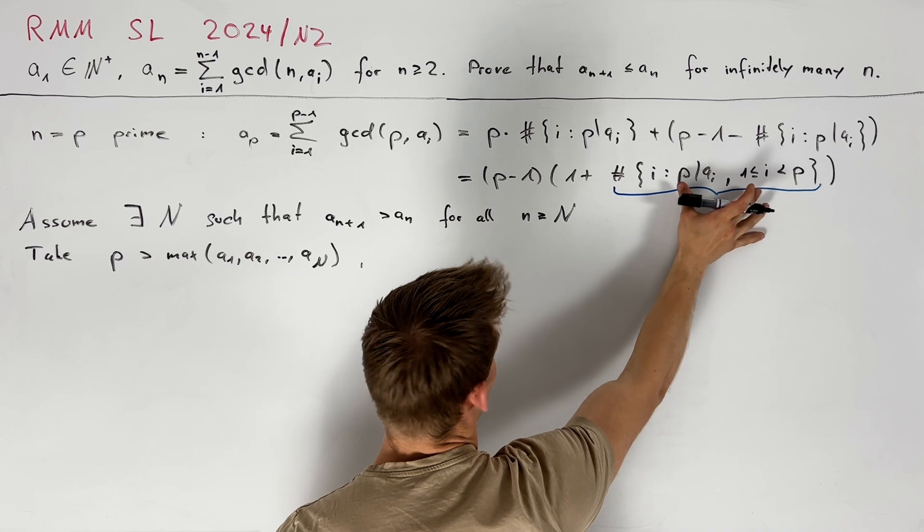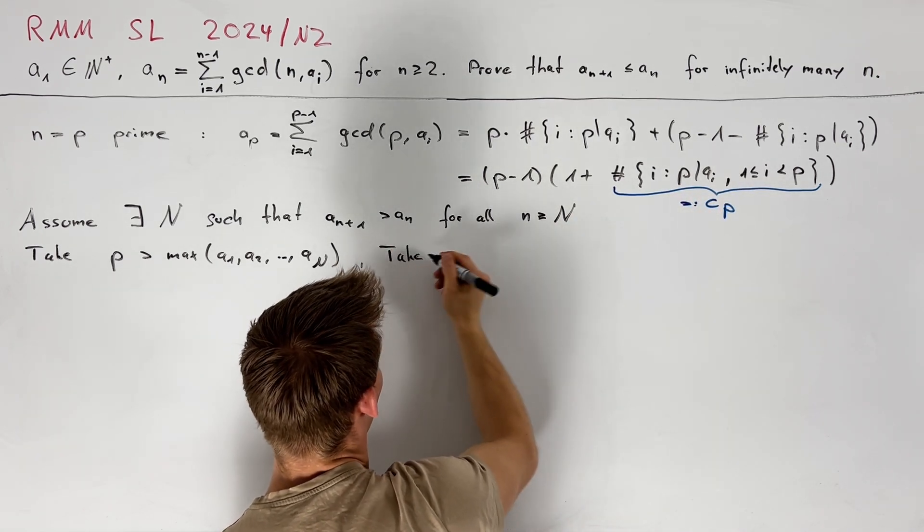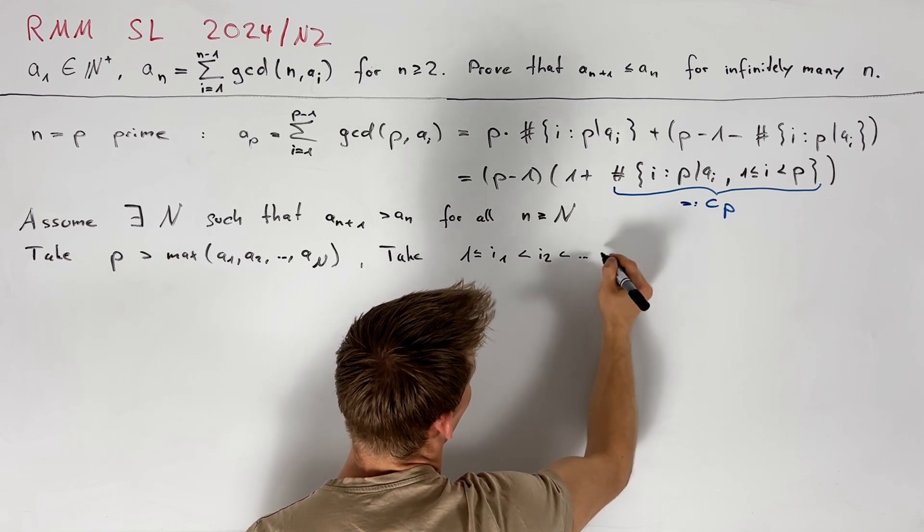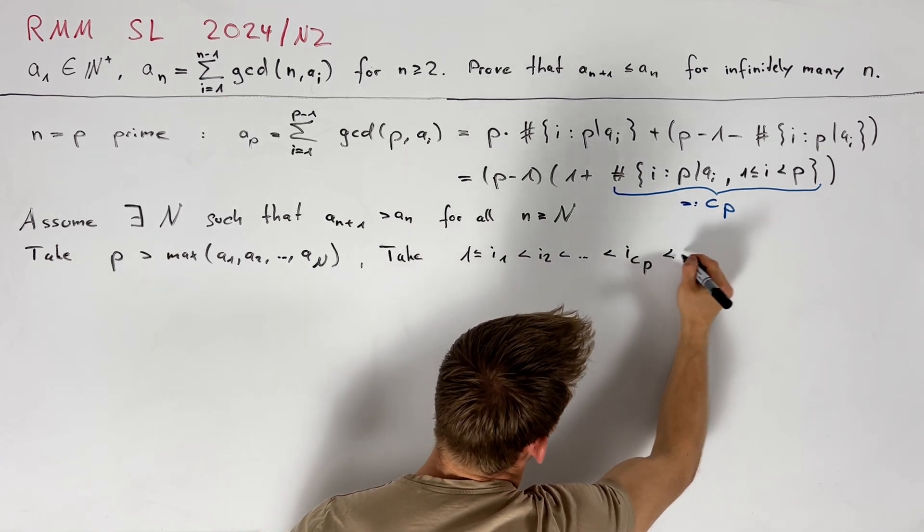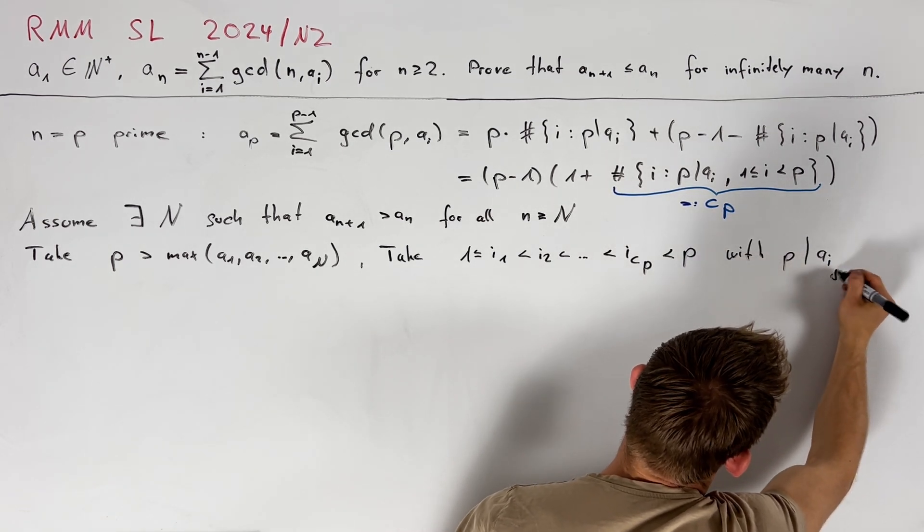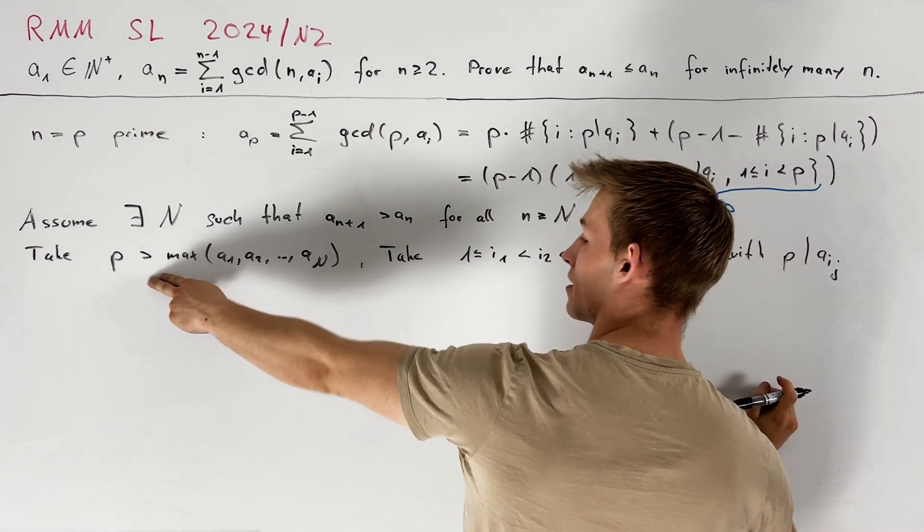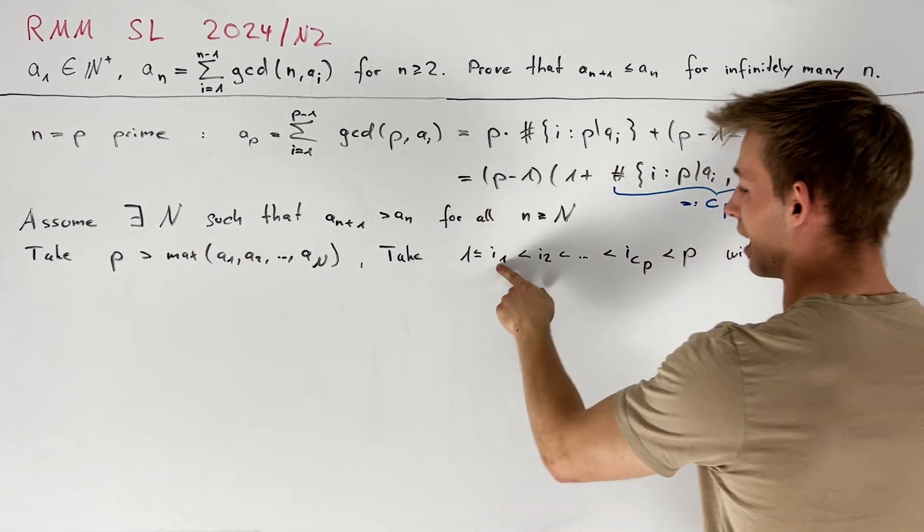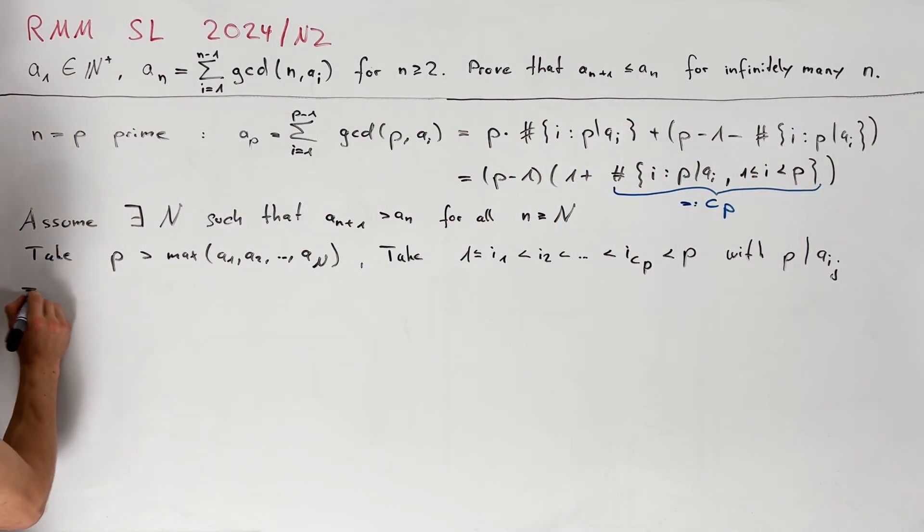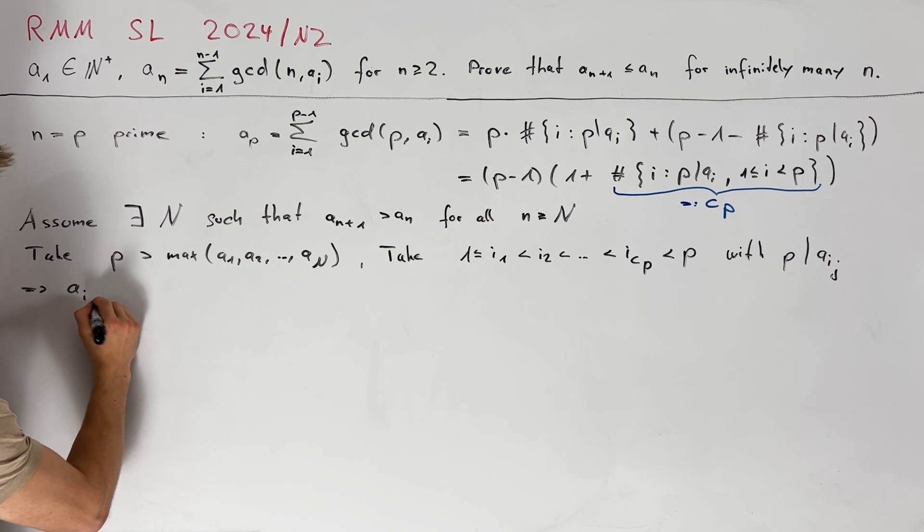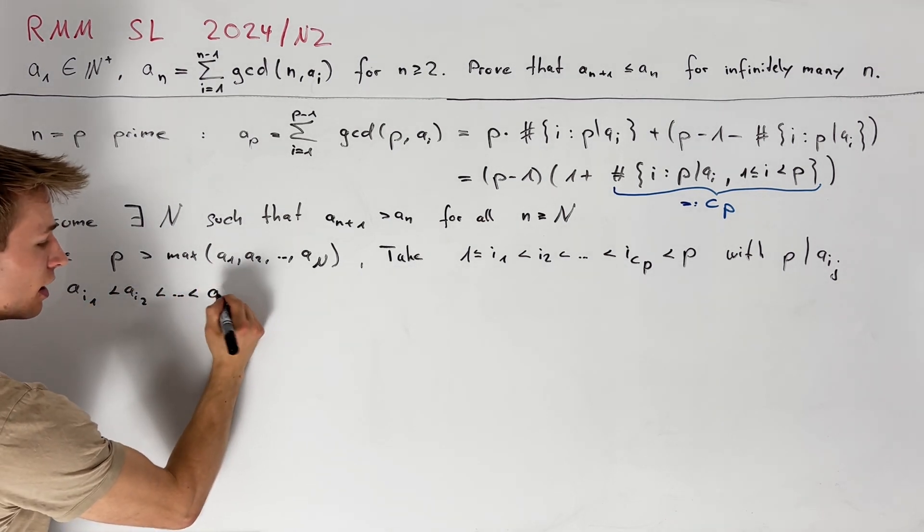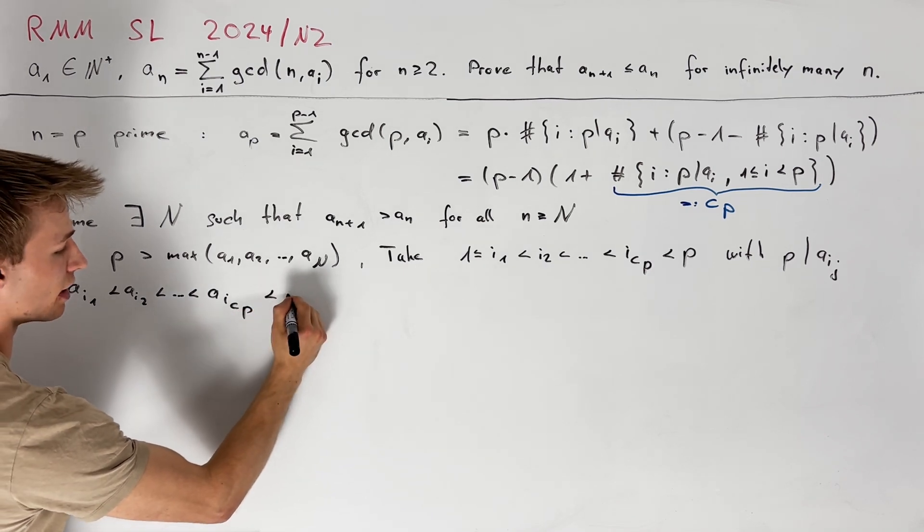Now we want to name the elements of the set. So take 1 less than or equal i_1 less than i_2 and so on less than i_{c_p} less than p such that p divides a_{i_j}. By our assumption that p divides none of the elements a_1 up to a_n we know that i_1 must be greater than n and therefore by our assumption here we can directly conclude that a_{i_1} less than a_{i_2} less than and so on less than a_{i_{c_p}} and now this is less than a_p.